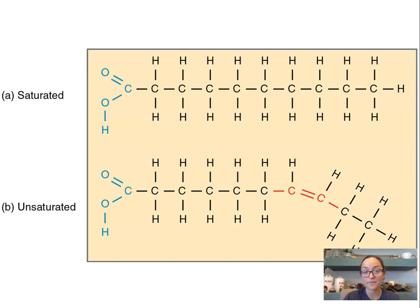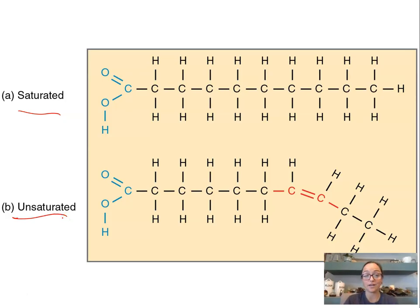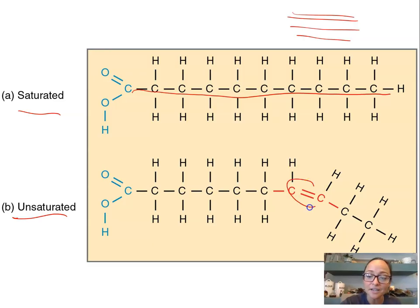When we look at fatty acids, we have two different categories: saturated and unsaturated. Saturated means full. This hydrocarbon or fatty acid is full of hydrogens. There are no more open places to bond any more hydrogens. It is saturated and it's a straight chain. Unsaturated means it's not full. You can see here this double bond between the two carbons—they can actually fit more hydrogens in this chain. This causes a kinked appearance.